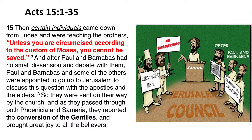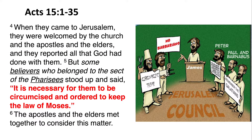They were sent on their way by the church, and as they passed through both Phoenicia and Samaria, they reported the conversion of the Gentiles and brought great joy to all the believers. When they came to Jerusalem, they were welcomed by the church and the apostles and the elders, and they reported all that God had done with them. But some believers who belonged to the sect of the Pharisees stood up — and that's important, because these are followers of Jesus as the Messiah who are still identifying as Pharisees — and said, 'It is necessary for the Gentiles to be circumcised and ordered to keep the law of Moses.'